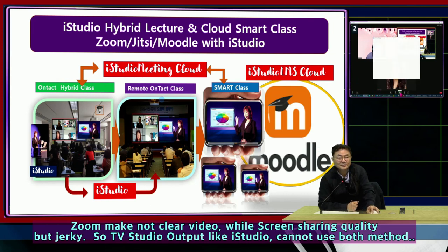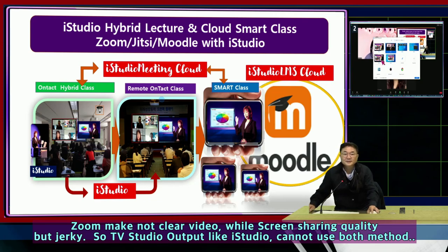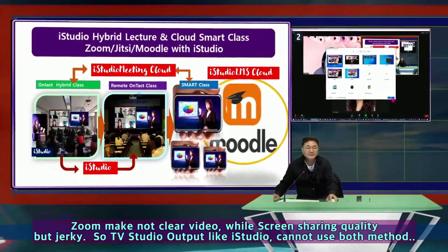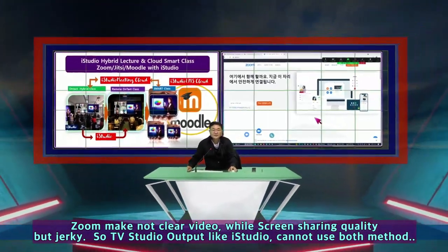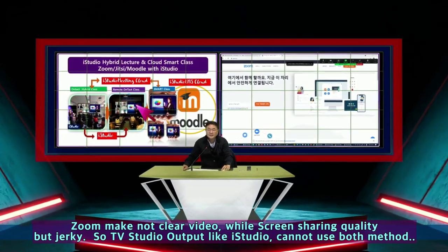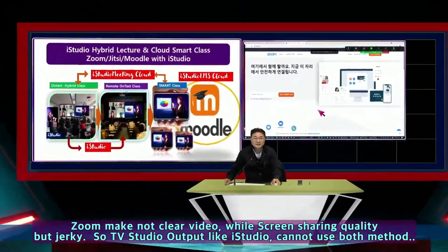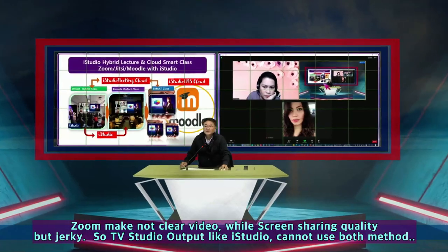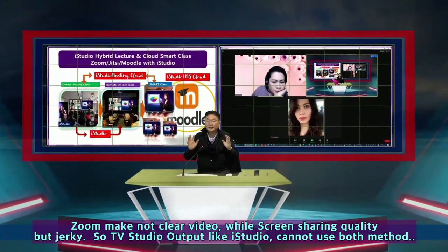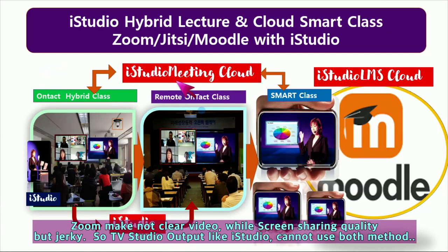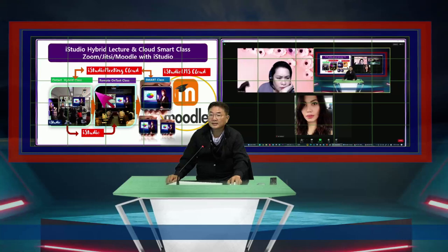I will try to show what the difference is. In sharing mode you can see it quite clearly, right? But if I turn off the sharing mode — now this is camera mode. Camera mode is smooth, but the quality of my PowerPoint, for example, the image is not clear.